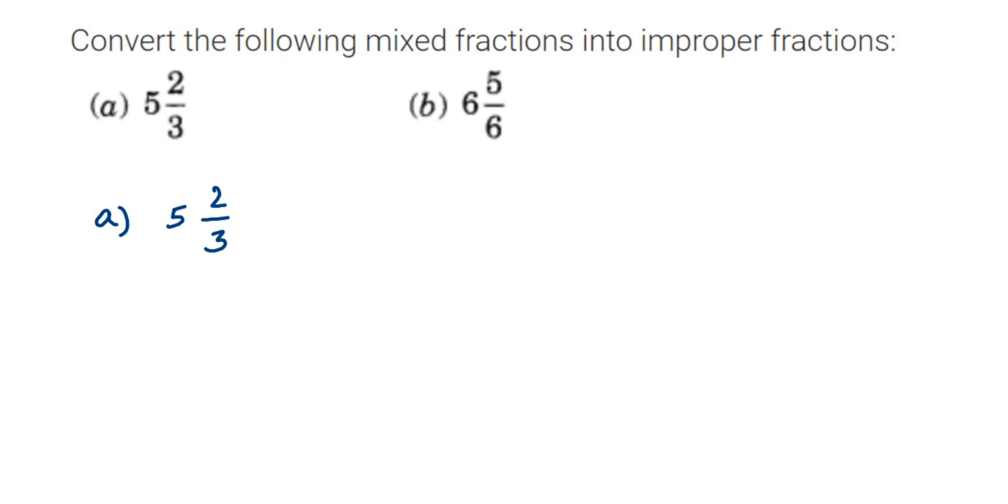Remember, 5 is a whole number and 2/3 is a fraction. Whenever you want to convert a mixed fraction into an improper fraction, it's very simple. You have to multiply the denominator and the whole number first.